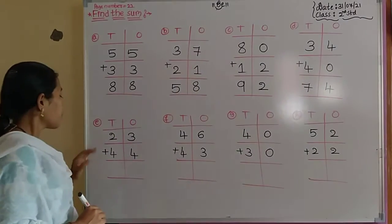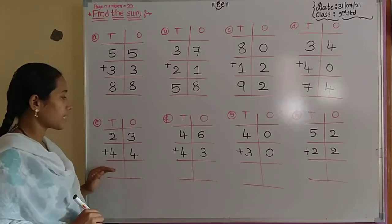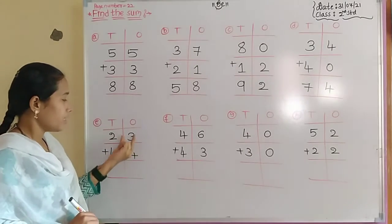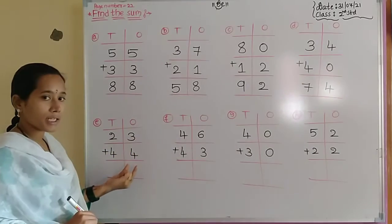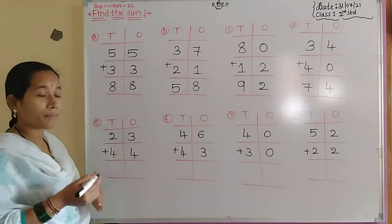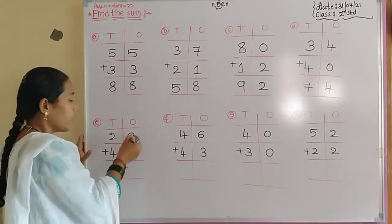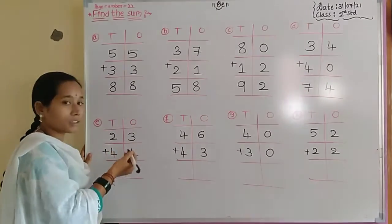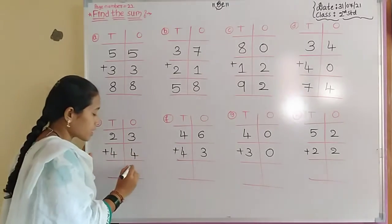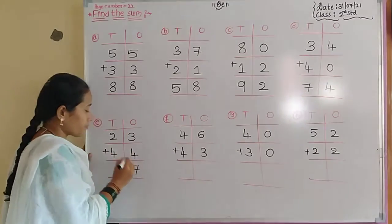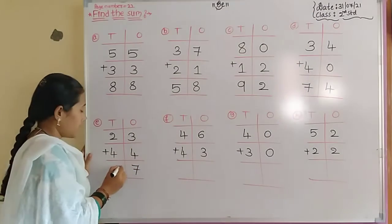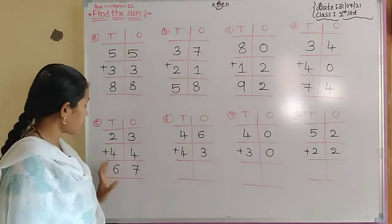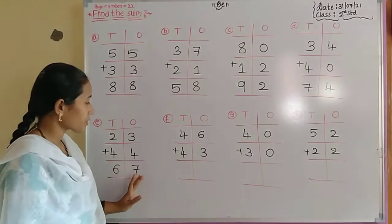Next problem: 23 plus 44. In the ones placement it contains 3 and 4. 3 plus 4 equals 7. Then tens placement: 2 plus 4 equals 6. The number name for the sum is 67.